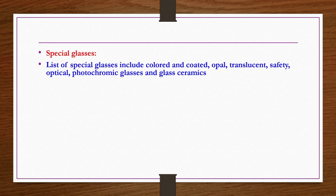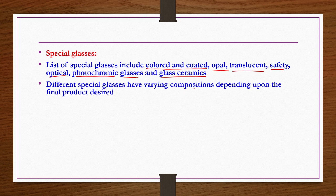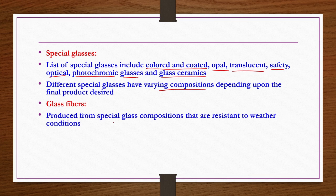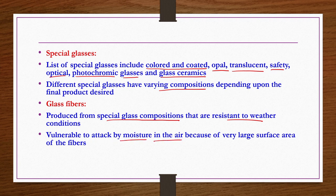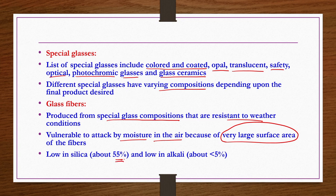Special glasses include colored and coated glasses, opal, translucent, safety glasses, optical glasses, photochromic glasses, and glass ceramics. Different special glasses have varying compositions depending on the final product desired. The last category is glass fibers, produced from special glass compositions resistant to weather conditions. They are vulnerable to attack by moisture in the air because of their very large surface area, are low in silica (about 55 percent), and low in alkali (less than 5 percent).